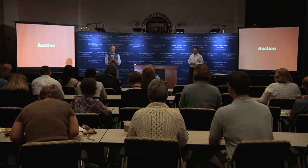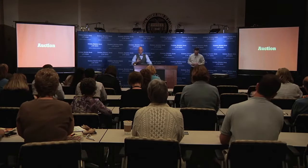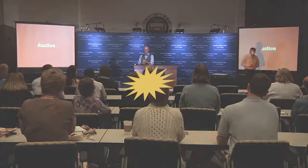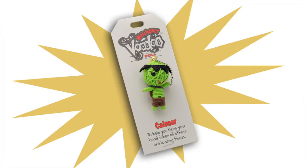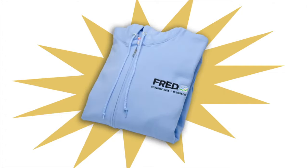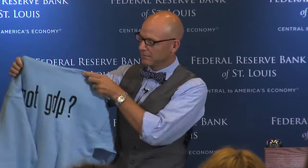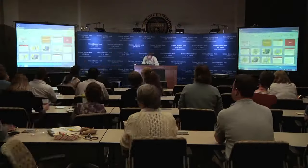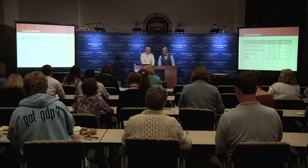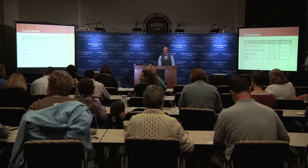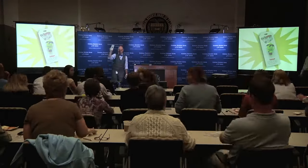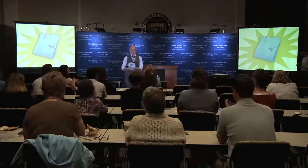To further our discussion of money, I introduced a guest auctioneer and we conducted an auction. Each audience member was given a certain amount of plastic chips, and each chip was worth $1. Our first round consisted of three separate lots, or auction items, which represented the total output of our auction economy. These items included a voodoo doll keychain, two chocolate bars and a gift card, and a Fred hoodie from the St. Louis Fed. The bidding was fast and furious, and at the end of the first round we tallied up the winning bids. Then we handed out more chips and held a second auction for an identical group of items, and again tallied the winning bids.